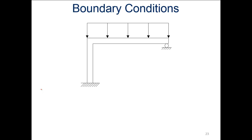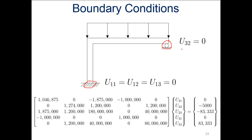For boundary conditions: node one is fixed, so all displacements at node one are set equal to zero. Node three is on a roller — it can rotate and slide left to right, but cannot have lateral displacement, so the lateral displacement at node three is zero. Applying both boundary conditions reduces our nine-by-nine system to a five-by-five stiffness matrix, multiplied by the displacement matrix and reduced load matrix.